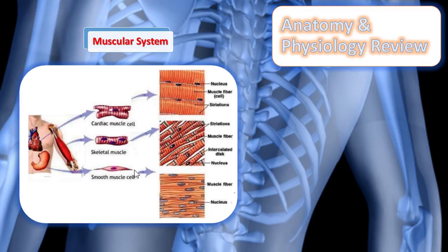Supporting structures for the muscular system include the tendons, the ligaments, and different parts of the bones and joints.